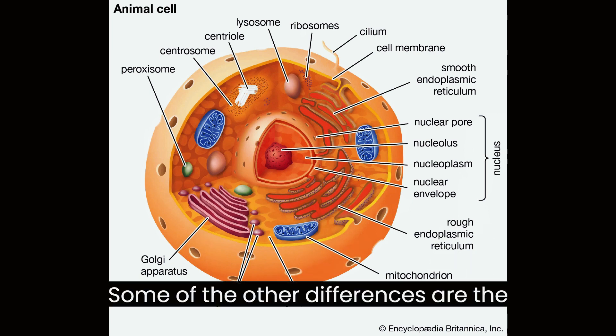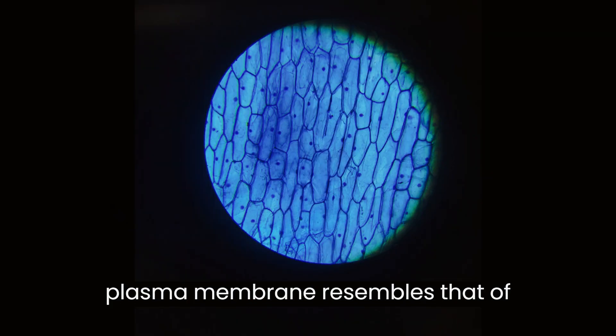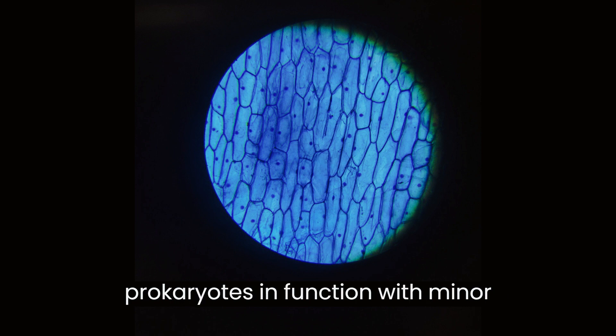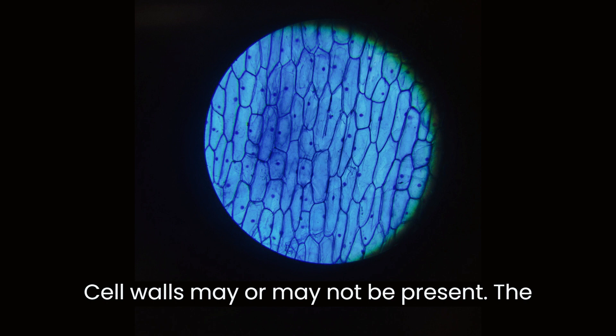Some of the other differences are: The plasma membrane resembles that of prokaryotes in function, with minor differences in the setup. Cell walls may or may not be present.